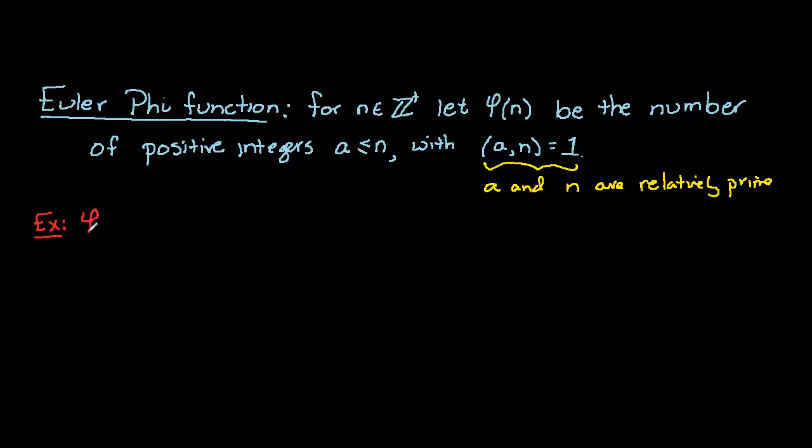And let's take a look at phi of 12. This is basically asking how many positive integers are relatively prime to 12 and less than or equal to 12.